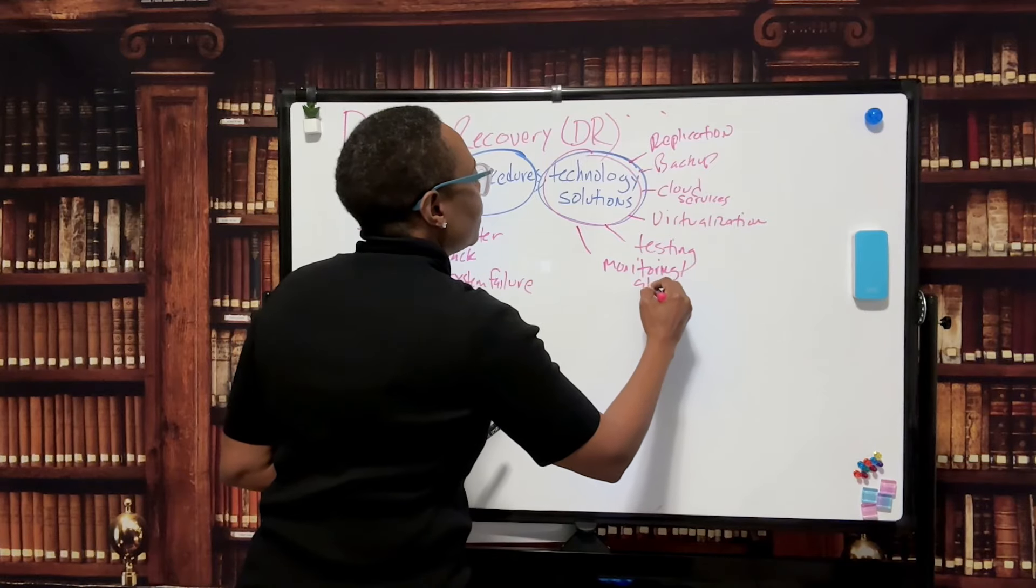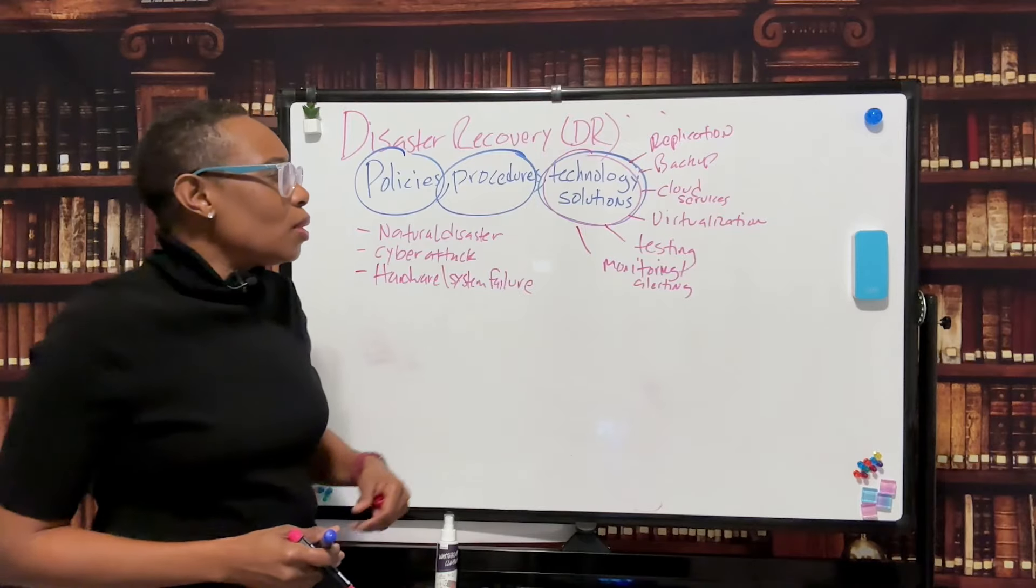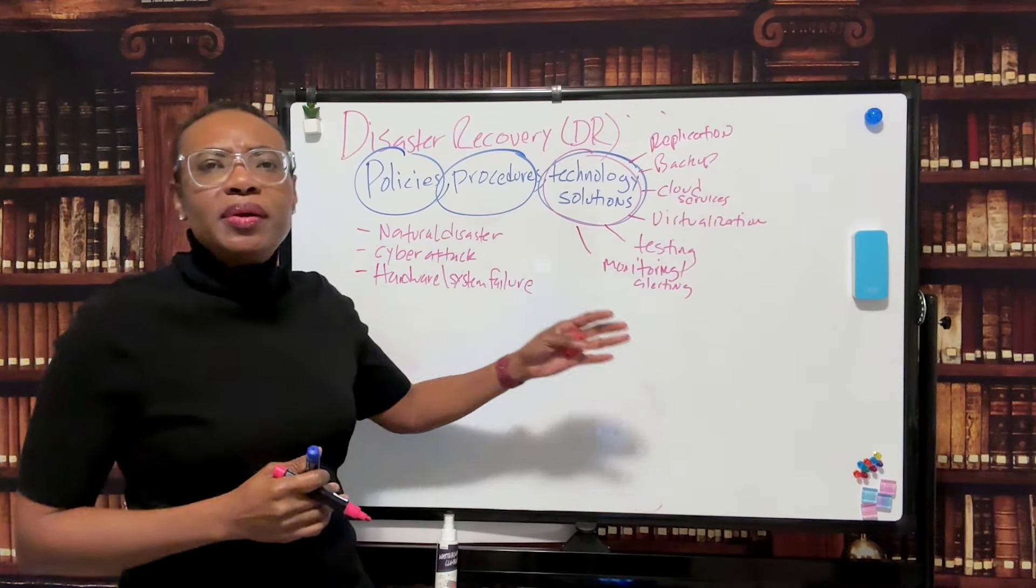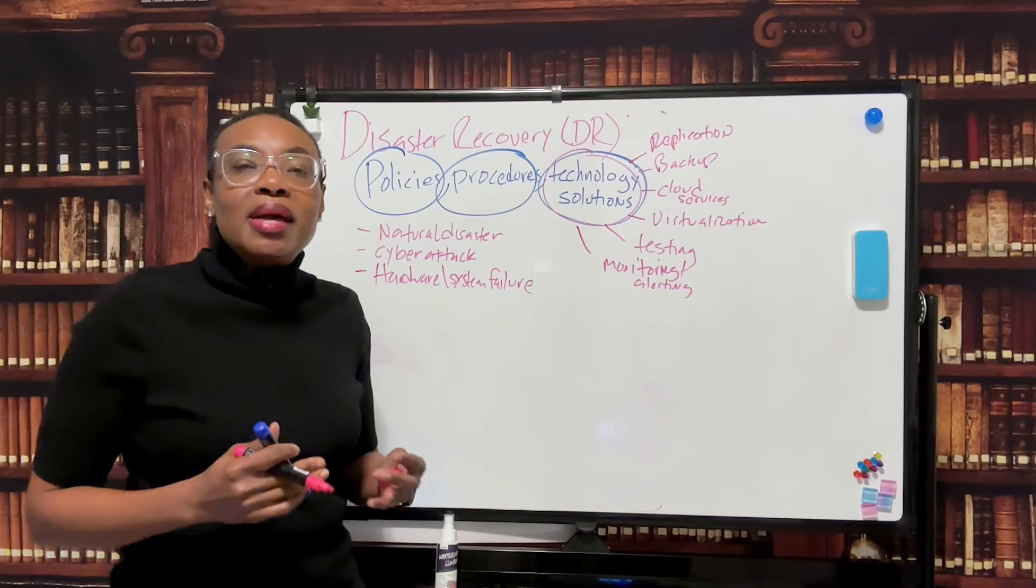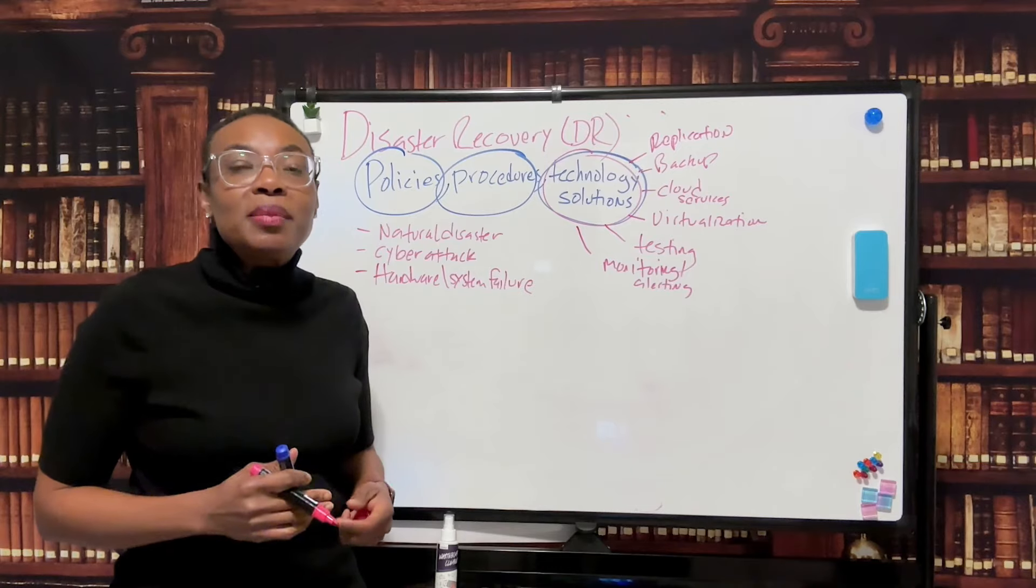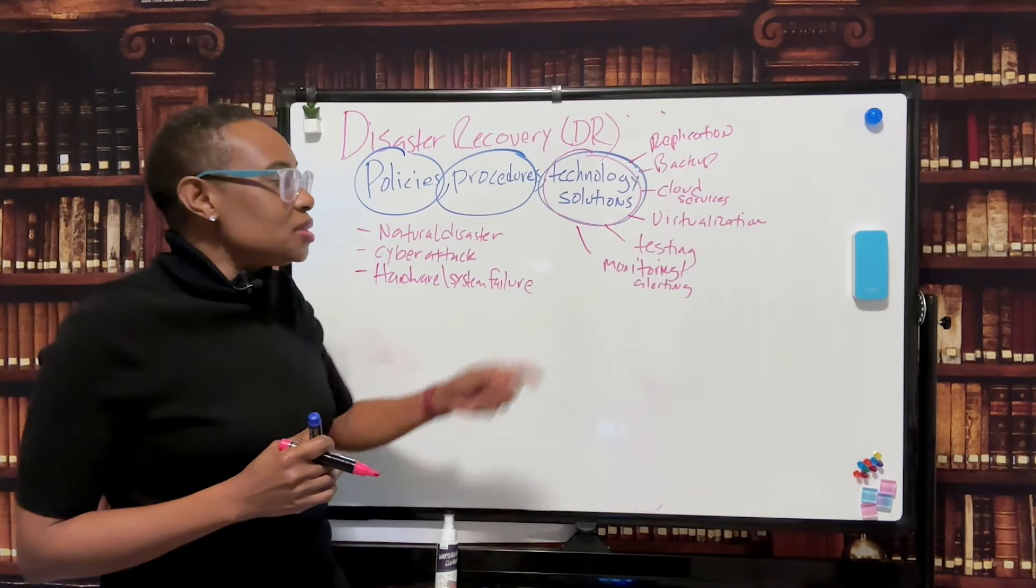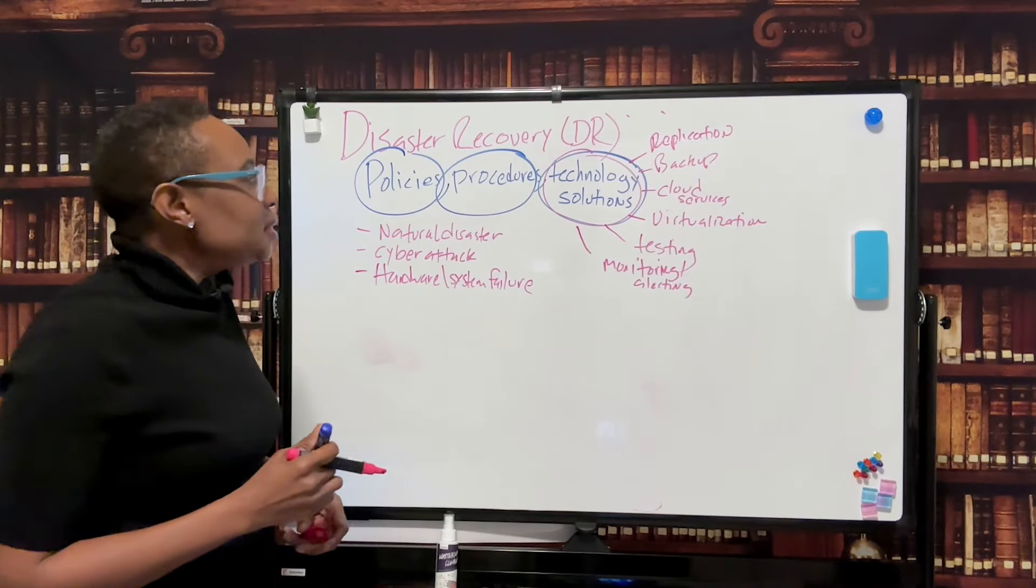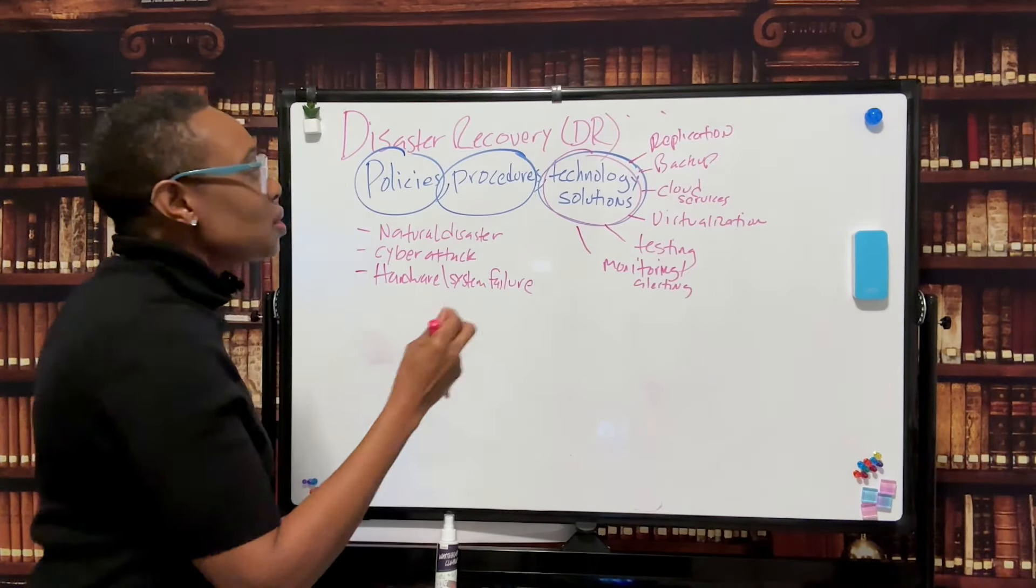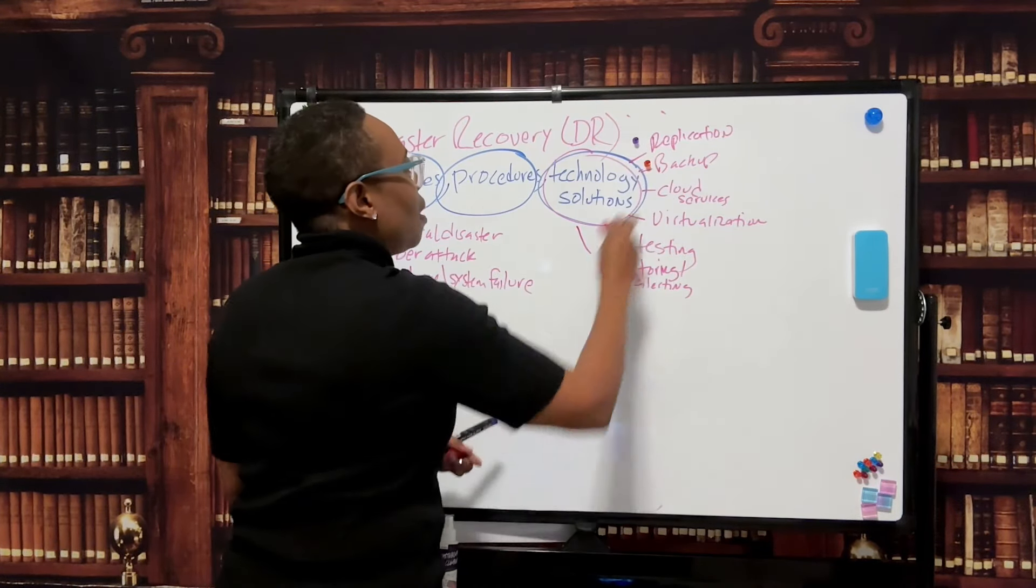Then we have monitoring and alerting. So all IT systems should be monitored for anomalies, performance problems, hardware issues. And alerting should be set up so the proper IT system person will be alerted so they can rectify this problem as soon as possible. And this is early detection. Monitoring is about early detection. So these are some of the many technology solutions that should be part of a comprehensive DR plan.